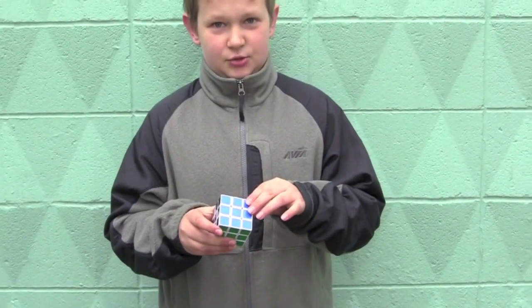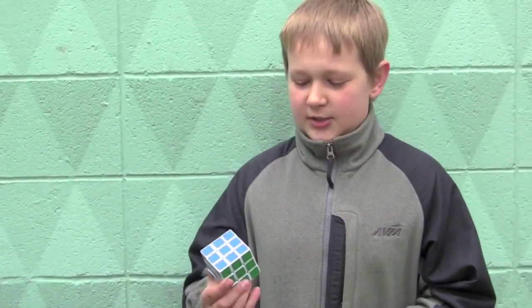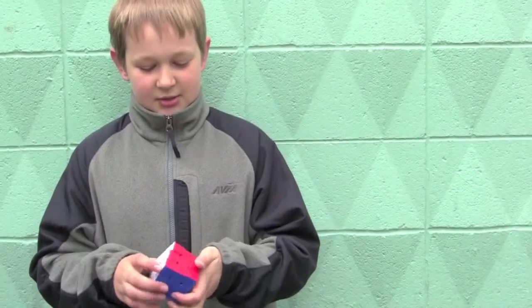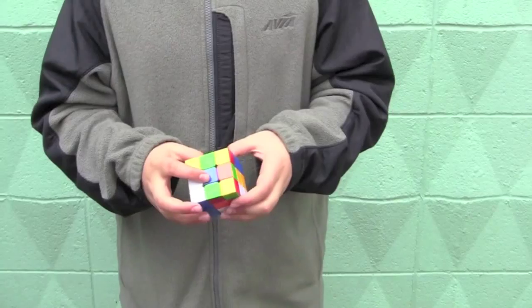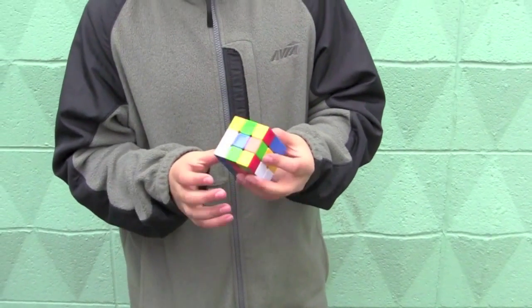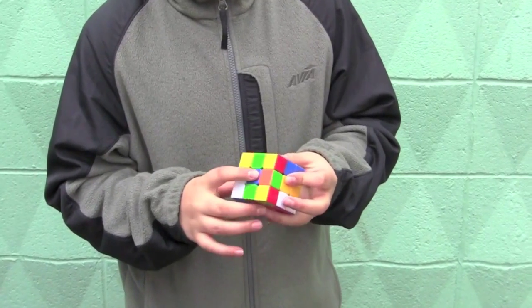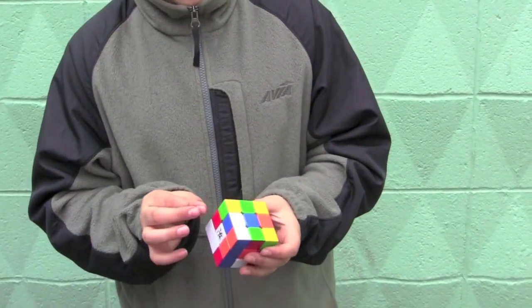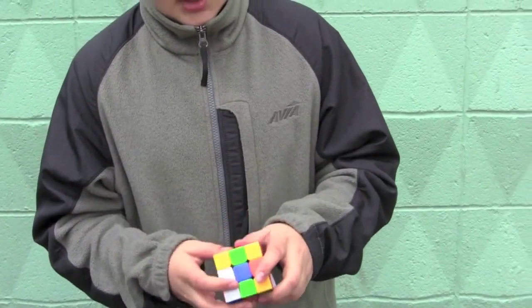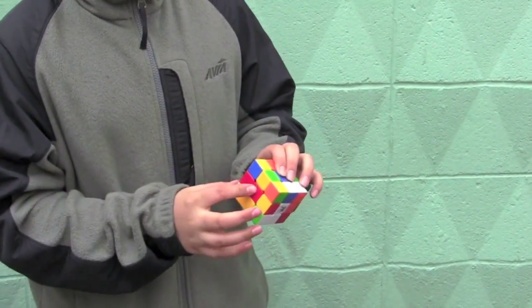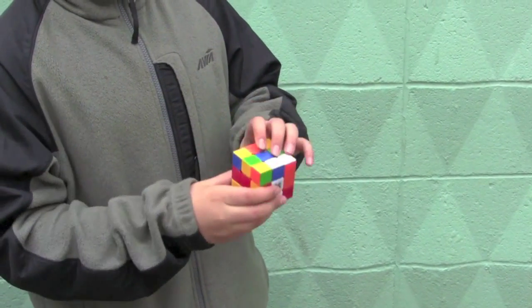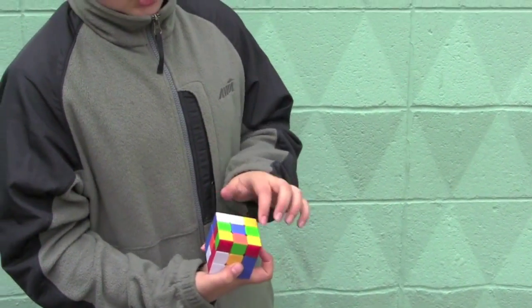Alright, so the first two layers, or F2L as it's usually called in speed cubing. There's many ways to solve this. I'm going to be teaching the beginner method right now. You can start on any color you want. Keep in mind that the centers never move in relation to each other. And then you have to make a cross.